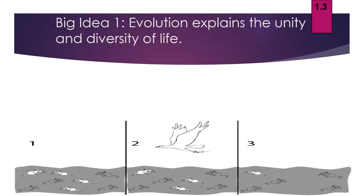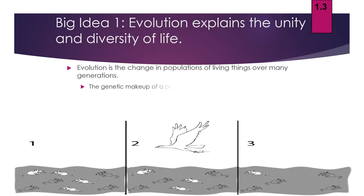We'll start with the first big idea: evolution explains the unity and diversity of life. Evolution is defined as a change in populations of living things over many generations. The genetic makeup of the population of a species actually changes when it evolves.